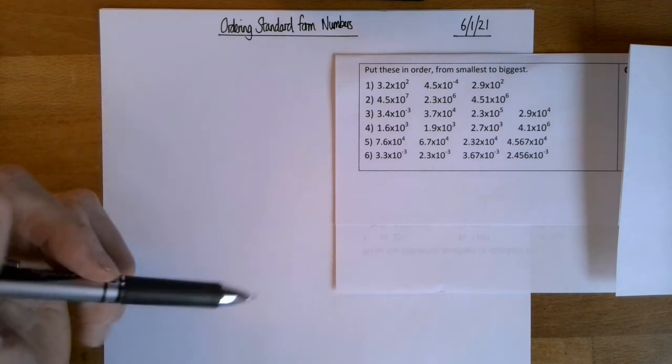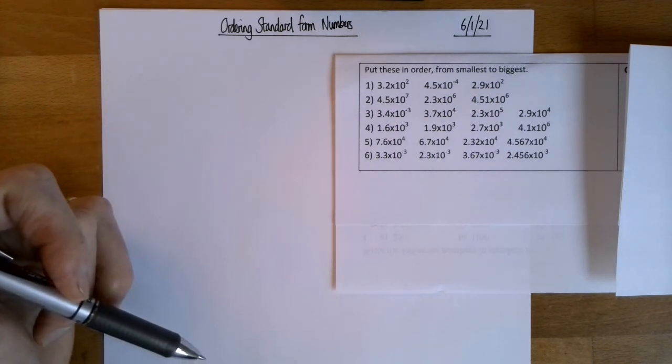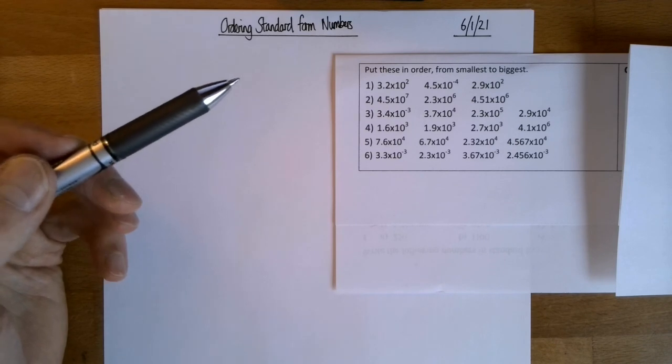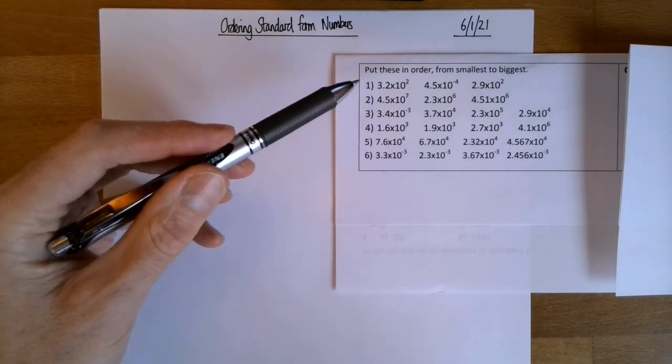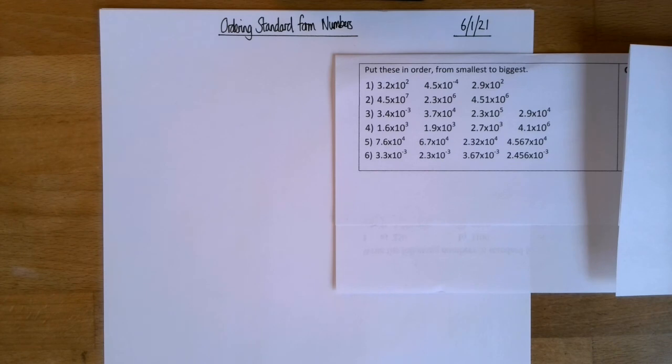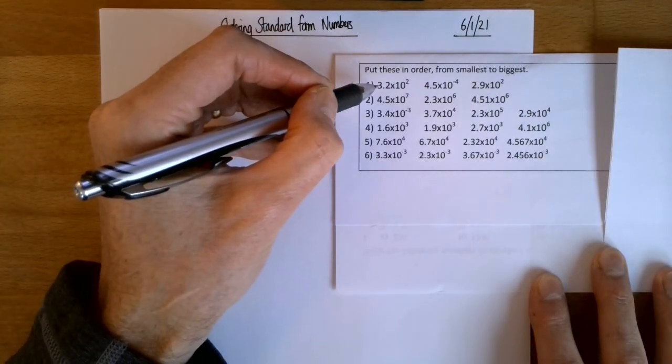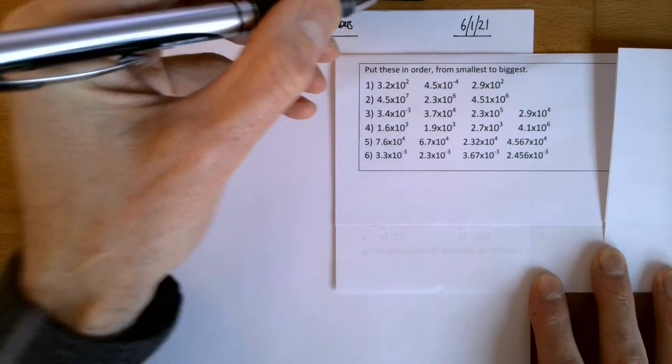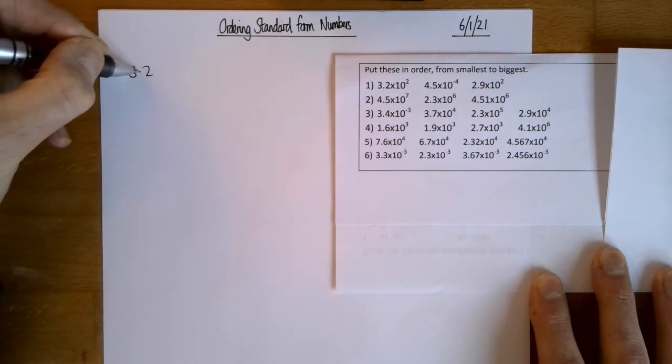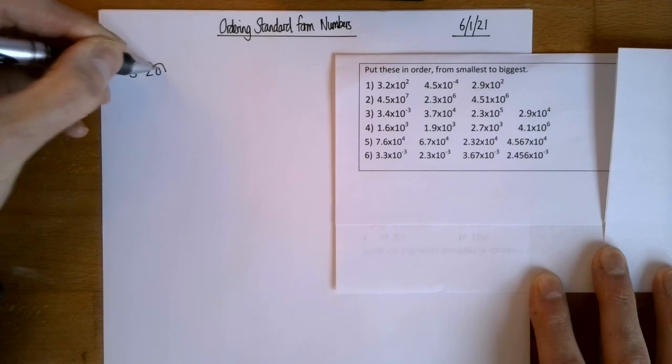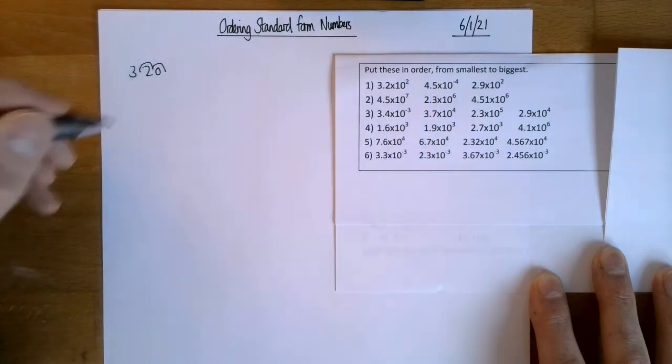So what if we're asked to put a list of standard form numbers in order? Like, for example, these. I've attached this sheet with these questions on. So you might want to print it out or you might just want to look at it on the screen. That's absolutely fine. What if we want to put these in order from smallest to biggest? Well, we've got a couple of options. One thing we could do is use the technique from yesterday and change these to ordinary numbers. So 3.2 times 10 to the 2. So that would be 3.2, two jumps. That's 320.